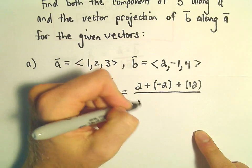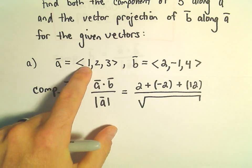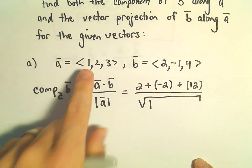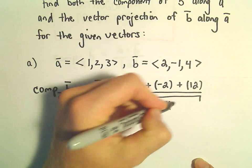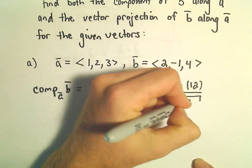We'll divide that by the magnitude of vector A. Well, the magnitude, we just square the components, so 1 squared is 1, 2 squared is 4, 3 squared is going to be 9.